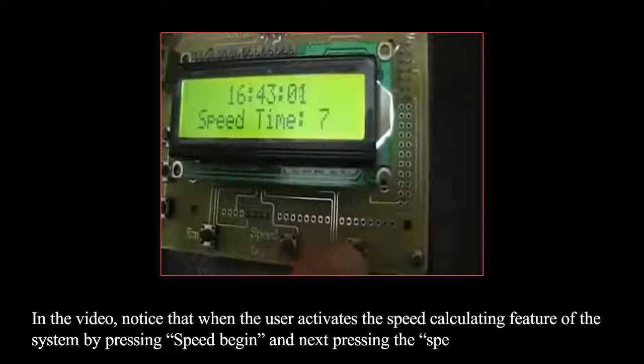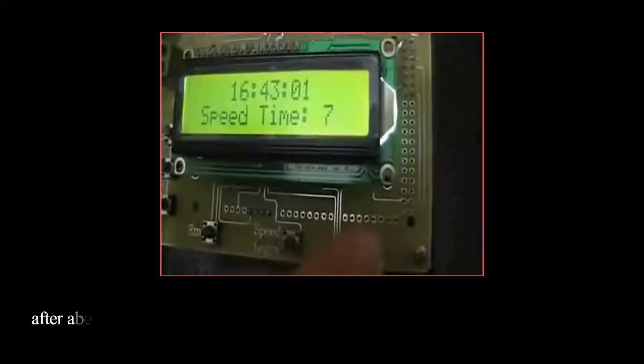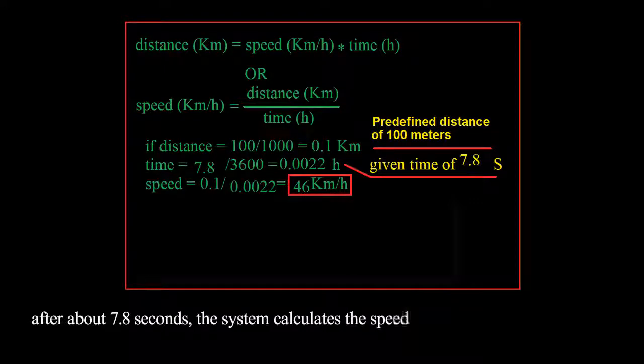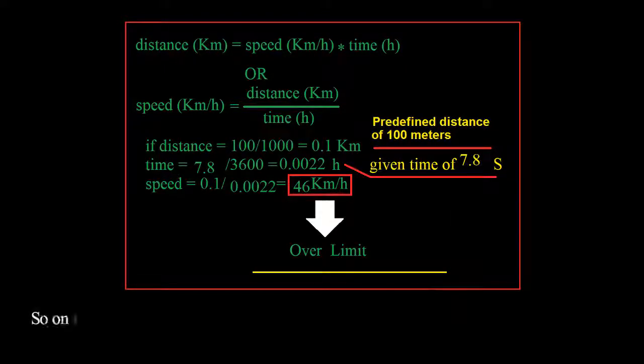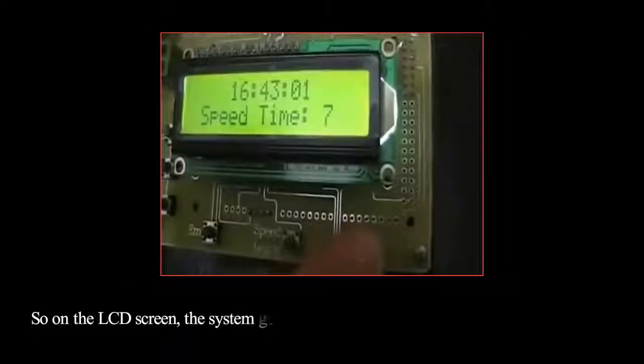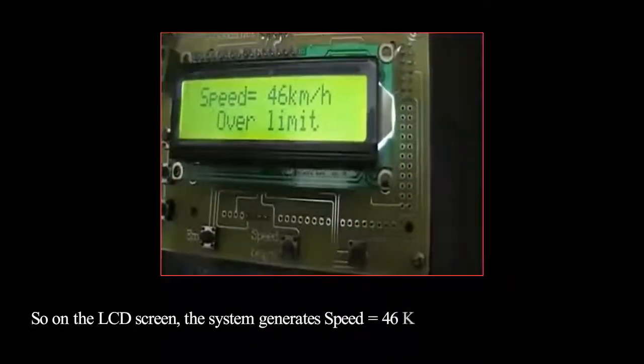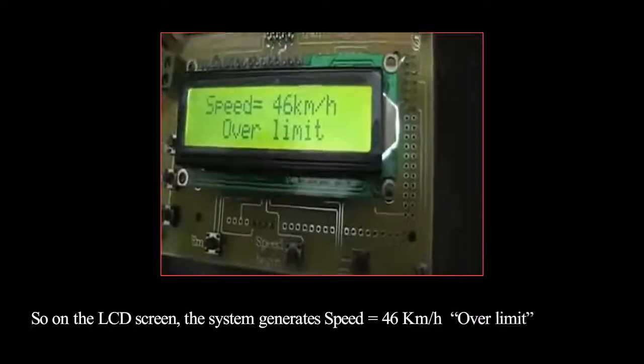The system calculates the speed as 46 kilometers per hour. So on the LCD screen, the system generates 'speed equals 46 kilometers per hour, over limit' warning.